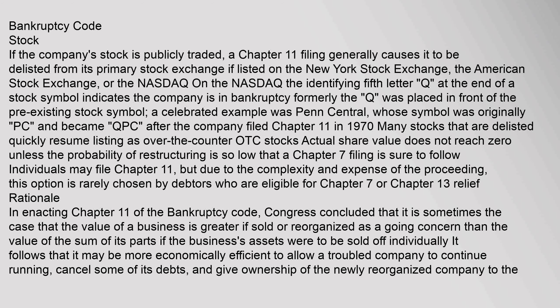If the company's stock is publicly traded, a Chapter 11 filing generally causes it to be delisted from its primary stock exchange, whether listed on the New York Stock Exchange, the American Stock Exchange, or the NASDAQ. On the NASDAQ, the identifying fifth letter at the end of a stock symbol indicates the company is in bankruptcy. A celebrated example was Penn Central, which filed Chapter 11 in 1970. Many stocks that are delisted quickly resume listing as over-the-counter (OTC) stock. Stock's actual share value does not reach zero unless the probability of restructuring is so low that a Chapter 7 filing is sure to follow.